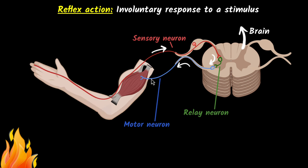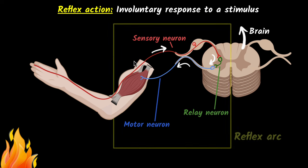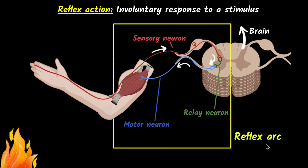And this is how it became automatic. Although the signal went to your brain and your brain understood that your hand is getting hot, it didn't wait for your brain to respond — it happened automatically. This automatic response, this whole pathway which consists of the sensory neuron, the relay neuron, and the motor neuron, is what we call the reflex arc.